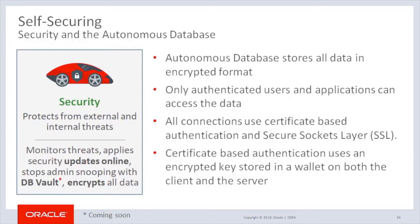Certificate-based authentication uses an encrypted key stored in a wallet on both the client where the application is running and the server where your database service and the Autonomous Database is running. The key on the client must match the key on the server to make a connection. A wallet contains a collection of files including the key and other information needed to connect to your database service. For data encryption security keys, Oracle allows separation of keys for encryption at rest. Oracle allows you to enable and disable encryption, and delivers it by default in the on option.